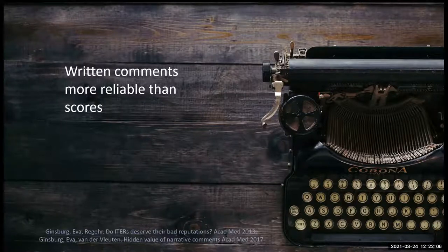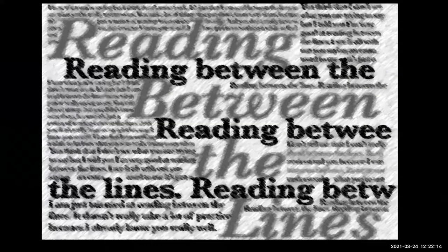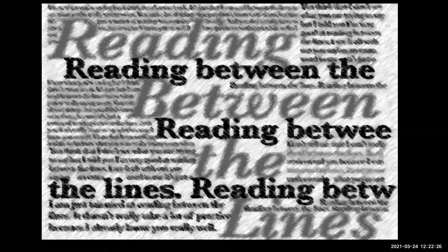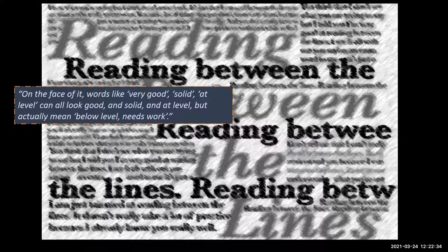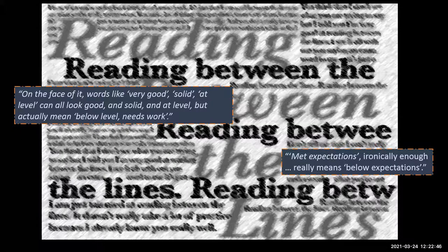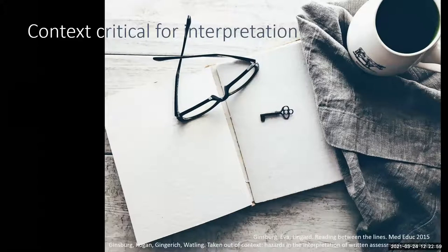We wondered how people could do that, since the comments are all over the place. What we found is that people really read between the lines. They use words like 'excellent' and 'outstanding,' but you could read through the lines that some aren't the ones that stand out. Participants noted that words like 'very good,' 'solid,' 'at level' can look positive but actually mean below level, needs work. And 'met expectations, ironically enough, really means below expectations.' Numerically we see this — almost no one gets a three, but readers really struggled to understand and read between the lines.